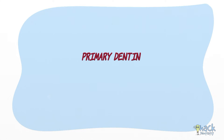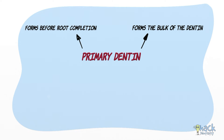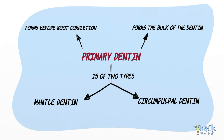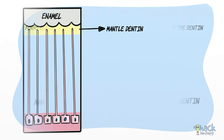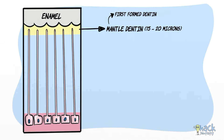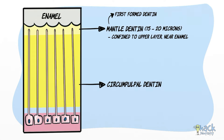Dentine as we know it is called primary dentine, and primary dentine is formed before root completion. It forms the bulk of the dentine and is of two types: mantle dentine and circumpulpal dentine. Mantle dentine is the first-formed dentine, 15 to 20 microns thick and confined to the upper layers near the enamel. The rest of the dentine is called circumpulpal dentine.